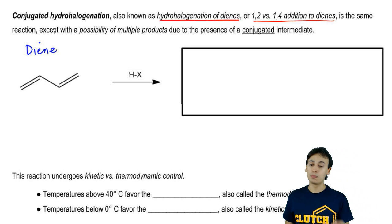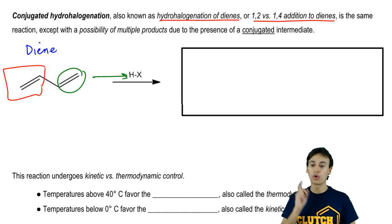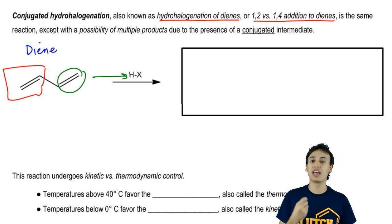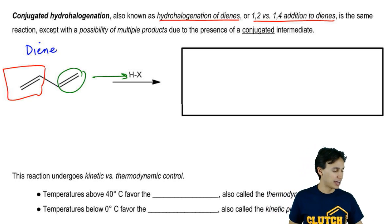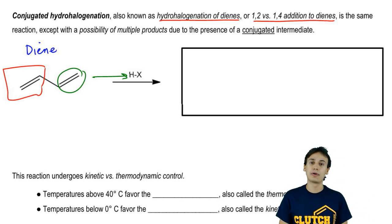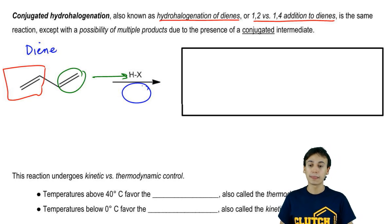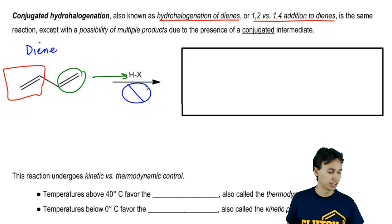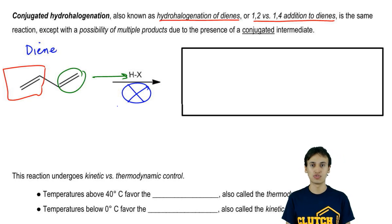One misconception to clear up: you might be thinking of allylic halogenation, which uses a radical initiator. But this is not a radical reaction — this is a carbocation reaction. There is no radical initiator here. We rely on the fact that you have one double bond and a carbocation present.